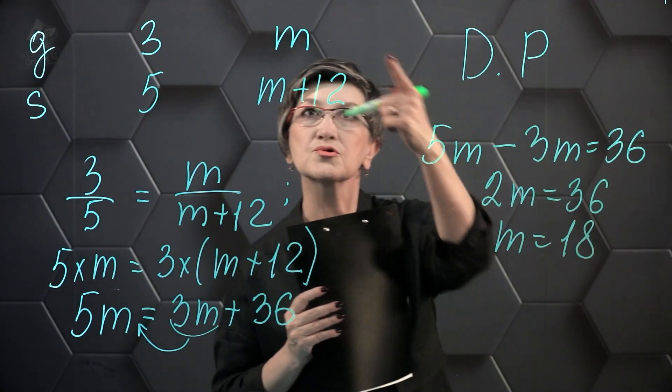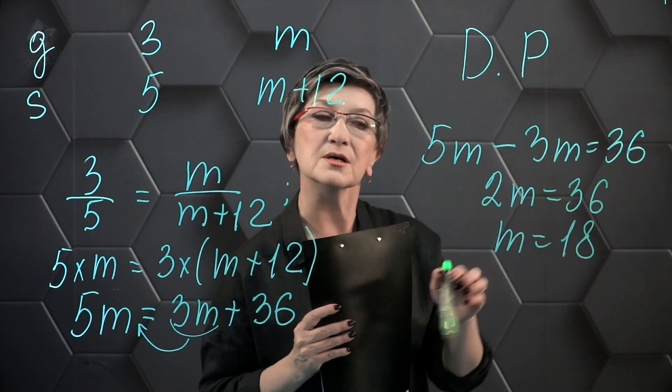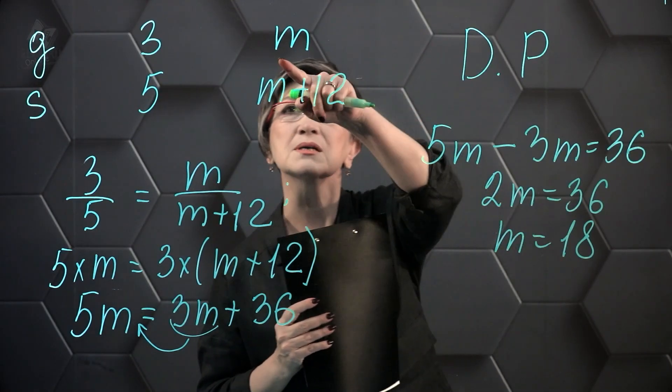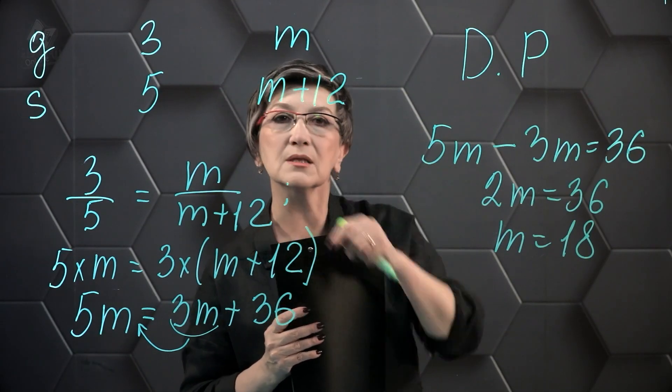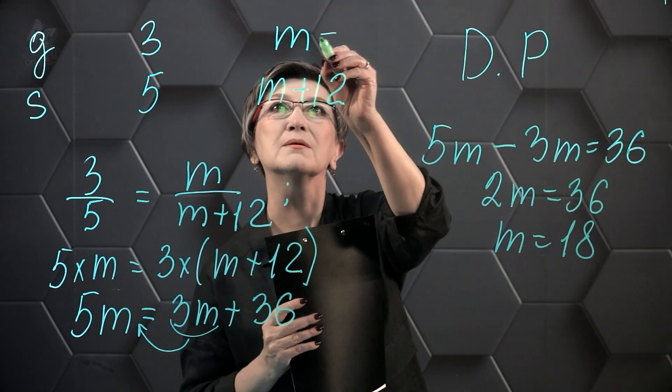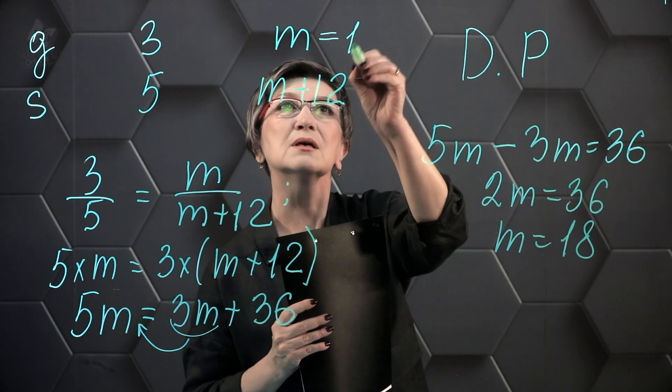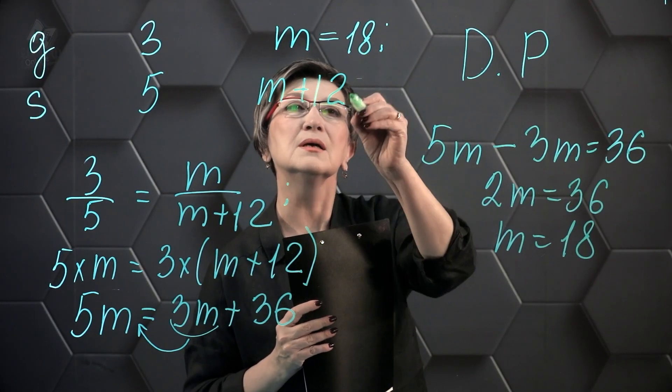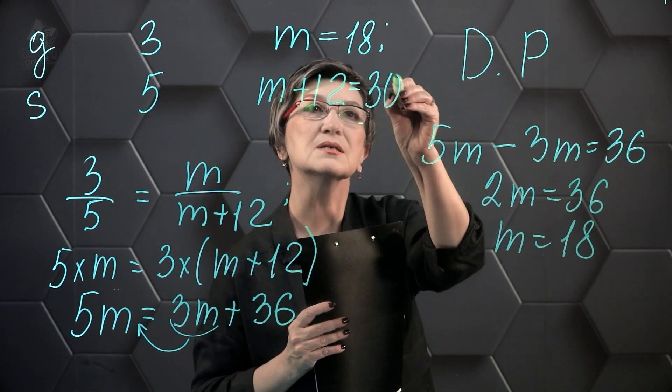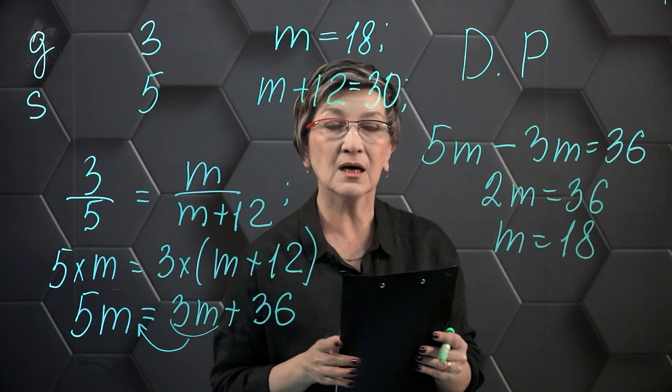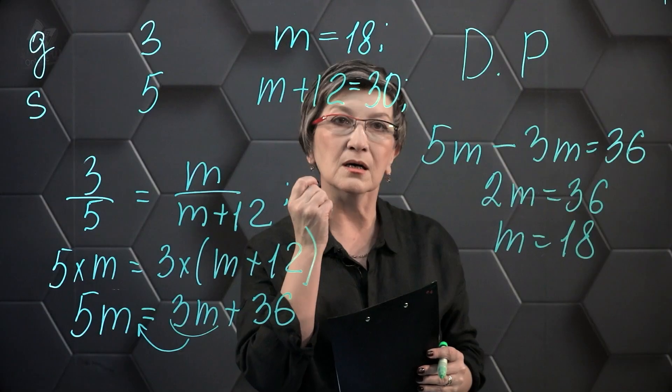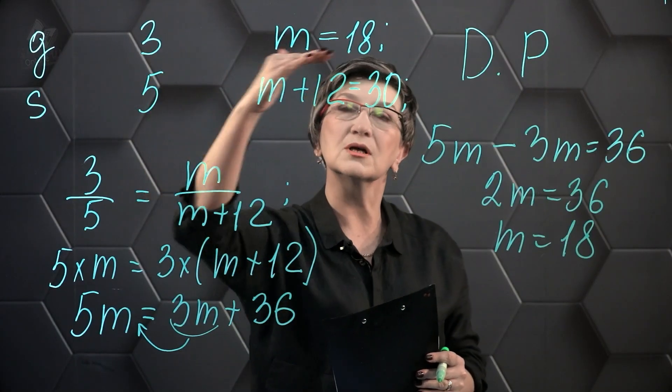Let us return to the condition of our problem to our record. Through M, we denote the mass of gold in our alloy. The mass of gold is 18 grams. Then the mass of silver is 30 grams. So we've answered the question: What is the mass of gold in the alloy?